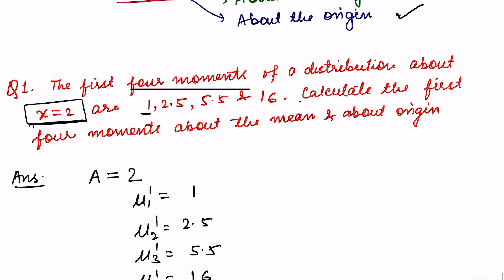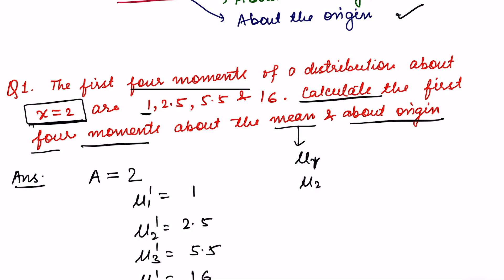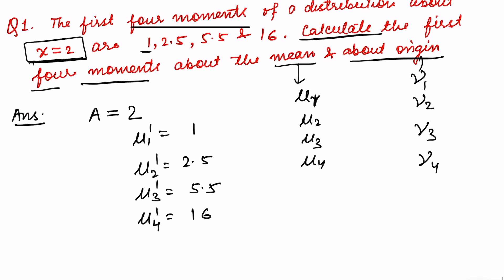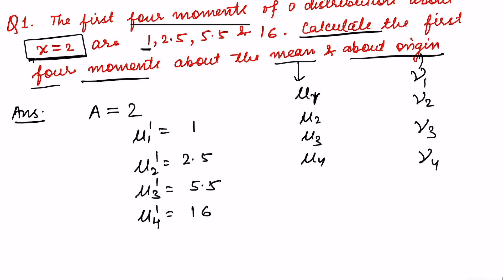We have to calculate the first four moments about the mean and about the origin. That is, we have to calculate mu 1, mu 2, mu 3, and mu 4 about the mean, and similarly mu 1, mu 2, mu 3, mu 4 about the origin. Let us move on and solve this question.